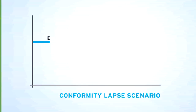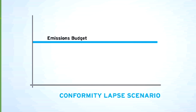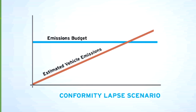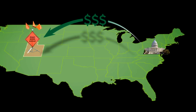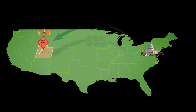The SIP lays out allowable levels for each source. The allowable level for transportation becomes the motor vehicle emissions budget. Determining air quality conformity by estimating future emissions is very important to maintain the flow of federal funds for transportation projects within the area. If there were to be a conformity lapse — when emissions are greater than the emissions budget laid out in the SIP — then federal funds would be restricted for capacity-increasing projects in the area.